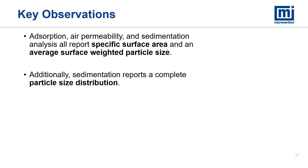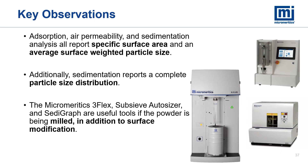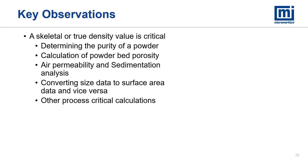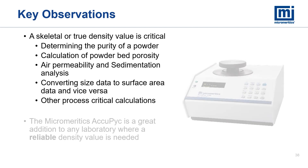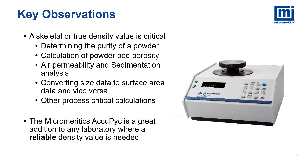Adsorption, air permeability, and sedimentation analysis all report specific surface area and an average surface-weighted particle size. Additionally, sedimentation reports a complete particle size distribution. The Micromeritics 3Flex, Sub-Sieve Autosizer, and Sedigraph are useful tools if the powder is being milled in addition to surface modification. Reviewing all the values calculated by the various techniques, one value stands out as probably the most critical: all the data used a skeletal density value to make appropriate calculations. The skeletal or true density helps to determine powder purity, calculate powder bed porosity, perform air permeability and sedimentation analysis, convert size data to surface area data and vice versa, and other process-critical calculations. The Micromeritics ACUPIC is a great addition to any laboratory where a reliable density value is needed.